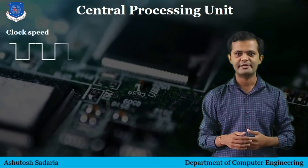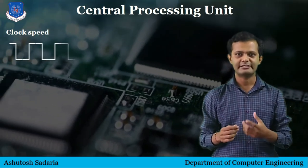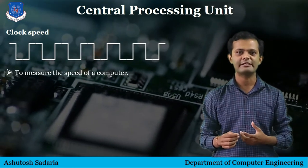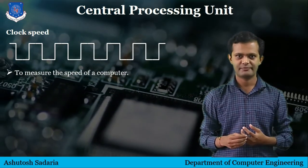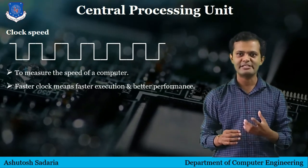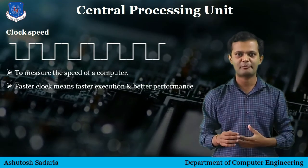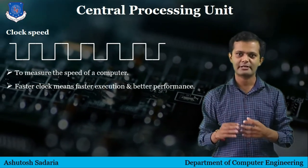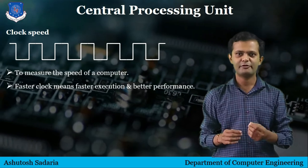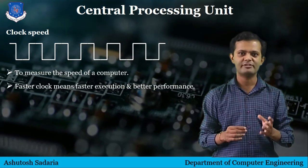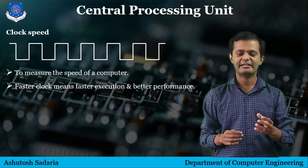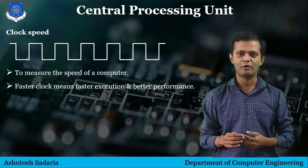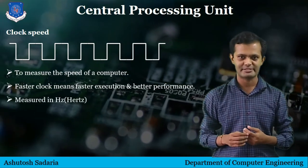The first one is clock speed. A clock generator generates the clock signal. The speed of the computer is used as a measure of how well it operates. All other things being equal, a faster clock means faster execution and better performance. That means if all other components of your processor are the same, then a CPU with a faster clock will be faster in execution and have better performance.